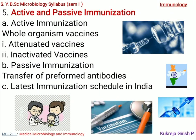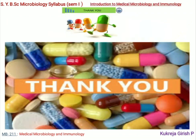With this, we will enter into the process of immunization, studying both active and passive immunization. In active immunization, we will talk about whole organism vaccines including attenuated vaccines and inactivated vaccines. We will also focus on passive immunization — the transfer of pre-formed antibodies — and have a look at the latest immunization schedule functional in India.